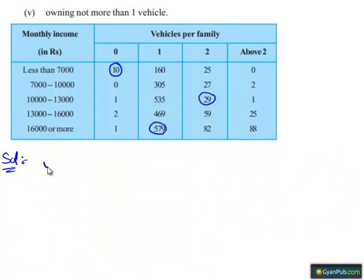Let E be the event that the family owns not more than one vehicle.